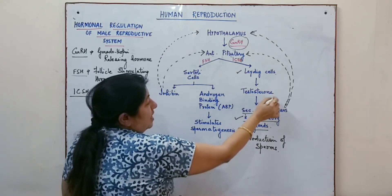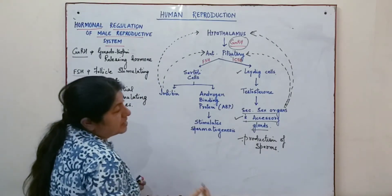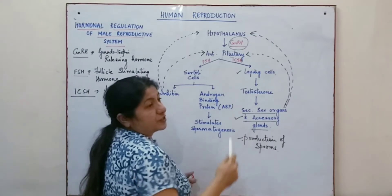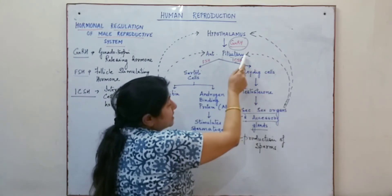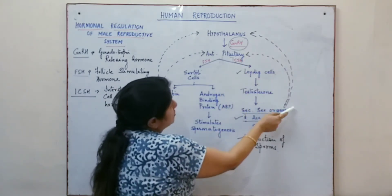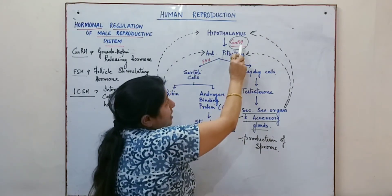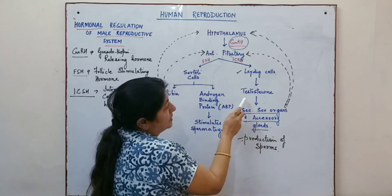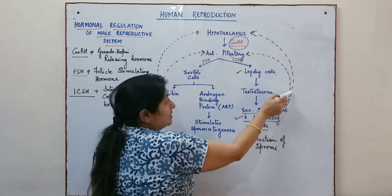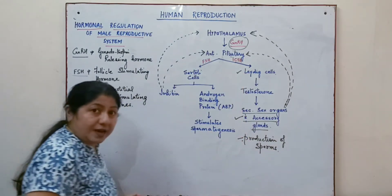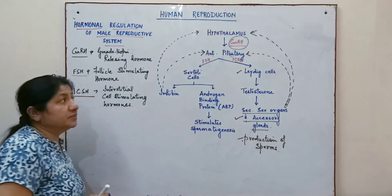The production of testosterone is under negative feedback control. If the amount of testosterone secreted is more, it sends a signal to the anterior pituitary to stop the release of ICSH, and also sends a signal to the hypothalamus to stop the production of GnRH. So the higher the testosterone level, the more it suppresses ICSH secretion from the anterior pituitary.